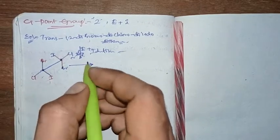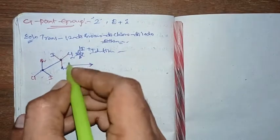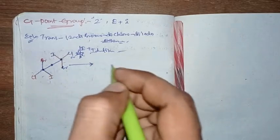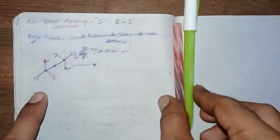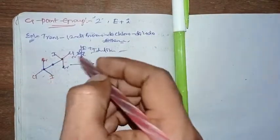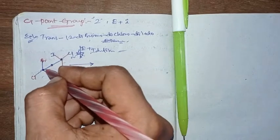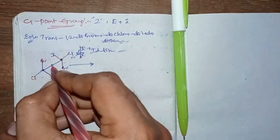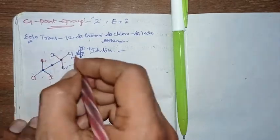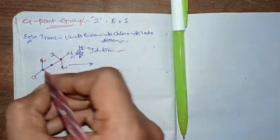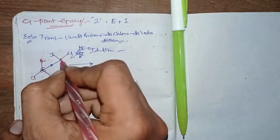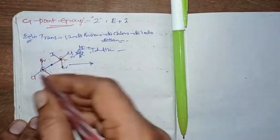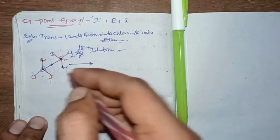When it comes to inversion center, it will have an inversion center. For the inversion center, what we consider is a center of gravity point. Here in ethane, in the carbon-carbon single bond, the center of gravity will be in the middle. With respect to that center, if we are inverting the atom positions of carbon 1 and carbon 2 — when inverting initially at the middle of carbon 1 and carbon 2 —